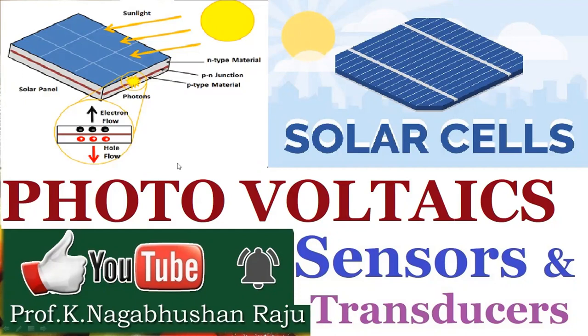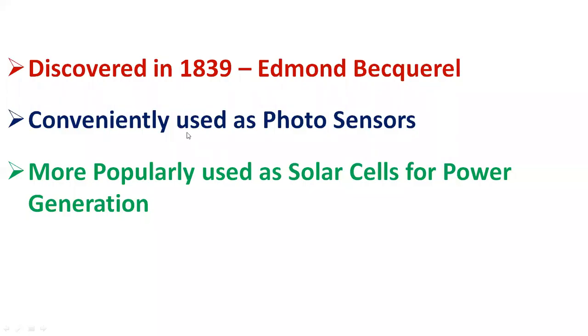Hi, friends. Welcome back to our series of sessions on sensors and transducers. Today we shall discuss about photovoltaics. Photovoltaics are also commonly known as solar cells. The photovoltaic effect was first discovered in 1839 by Edmund Becquerel. Photovoltaics are conveniently used as photosensors, and more popularly used as solar cells for power generation.